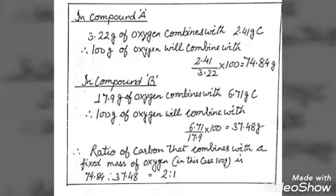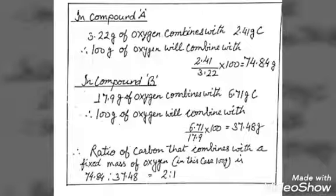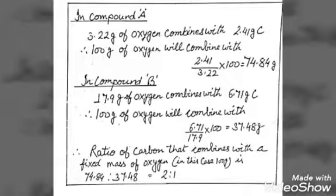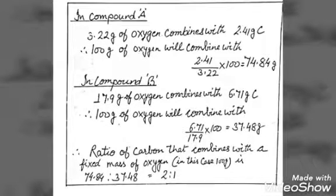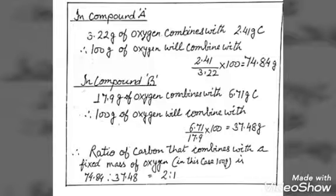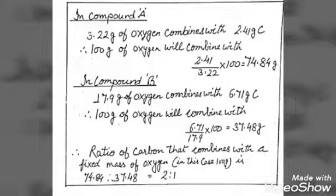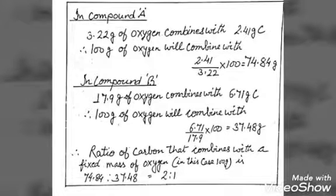In compound B, 17.9 grams of oxygen combines with 6.71 grams of carbon. So 100 grams of oxygen will combine with 37.48 grams.